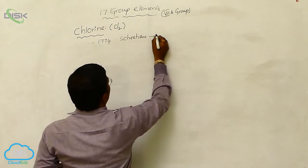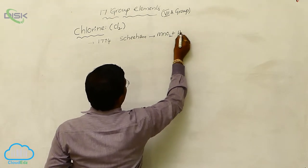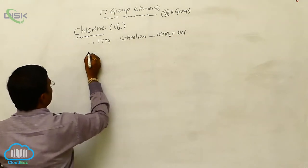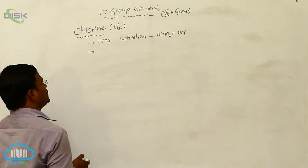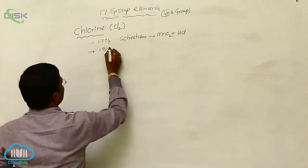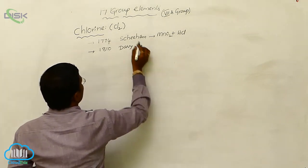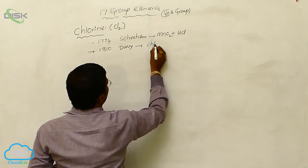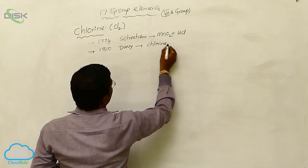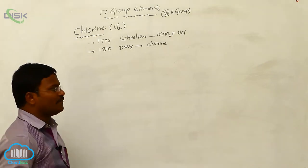In 1774, by reacting manganese dioxide onto HCl, the first reported synthesis by Scheele. Whereas in 1810, Davy is the scientist who named this compound as chlorine. He reported the nature and name for chlorine.